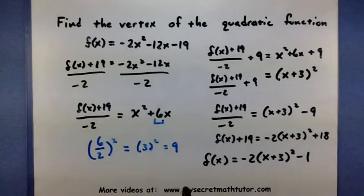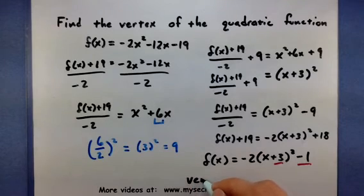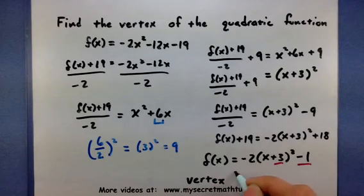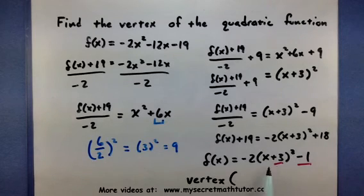All of these steps have taken our original function and put it into a different form. When it's written in this form, these two numbers tell you the coordinates of your vertex. The x-coordinate is the opposite of the number inside the parentheses.